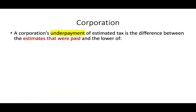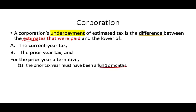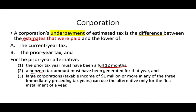For corporations, the underpayment of estimated taxes is the difference between the estimates paid — there's no withholding for corporations — and the lower of the current year tax or the prior year tax. For the prior year alternative, the corporation must have had a full year with a non-zero tax amount. If it's a large corporation — meaning taxable income of $1 million or more in any of the prior three years — you can use the prior year alternative only for the first installment of the year.